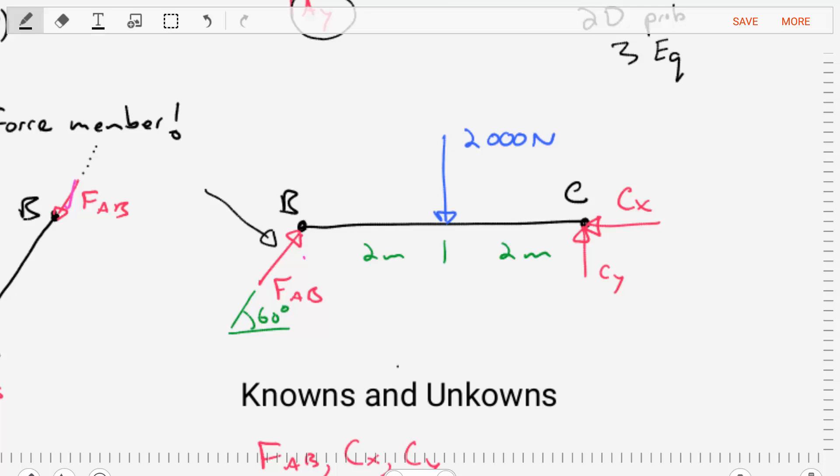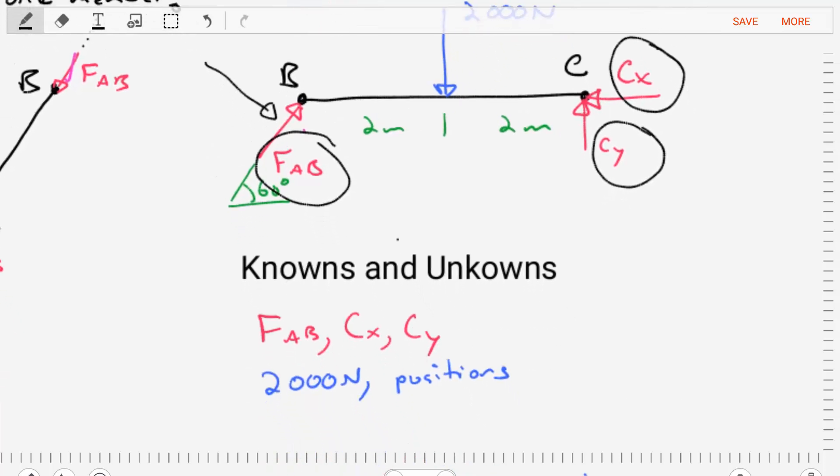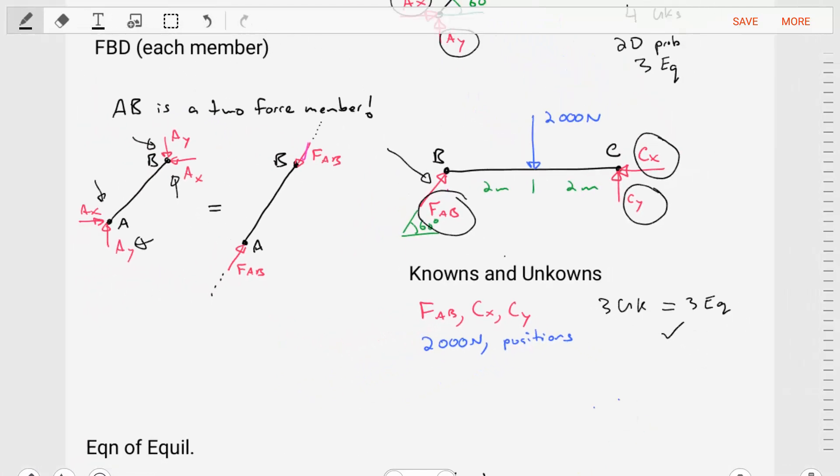So now we have a free body diagram that has three unknowns: this force FAB and the forces CX and CY. Now, this diagram, the unknowns, there are three of them. This is a 2D problem, so there are three equations. These numbers are equal to each other. We can solve for those forces and subsequently get what we wanted, which is CX and CY. So let's go ahead and do that.